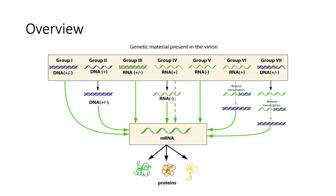Here is an overview of what we're going to be looking at today. We have seven groups that we'll tackle individually. Group one is double-stranded DNA, group two is single-stranded DNA, group three is double-stranded RNA, group four is plus single-stranded RNA — which is basically just mRNA — group five is negative single-stranded RNA, group six is plus single-stranded RNA with a double-stranded DNA intermediate, and group seven is gapped double-stranded DNA.